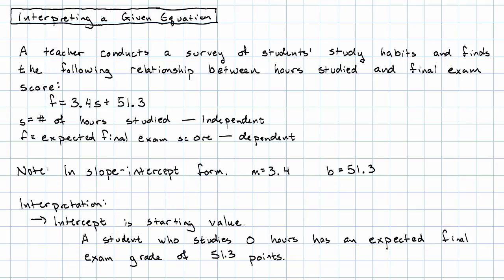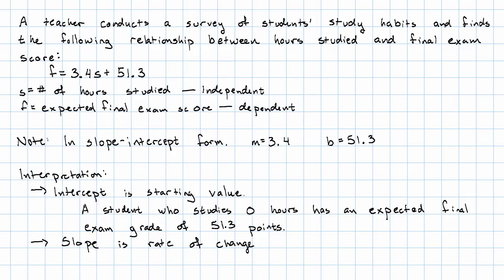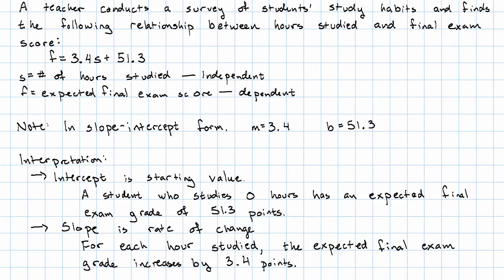A student who studies zero hours has an expected final exam grade of 51.3 points. The slope is the rate of change. So for each hour studied, for each increase by one of our independent variable, the expected final exam grade increases by 3.4 points.